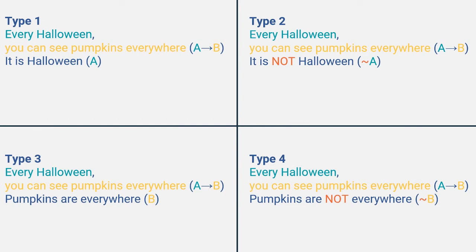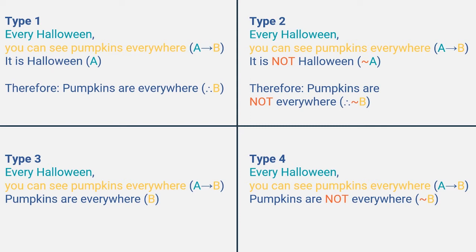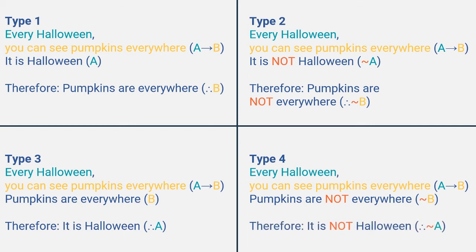All that is left now is to fill in the conclusions. Example 1: we affirm the consequent — therefore I can see pumpkins everywhere, or therefore B. Example 2: we deny the consequent — therefore I cannot see pumpkins everywhere, therefore not B. Example 3: we affirm the antecedent — therefore it is Halloween, therefore A. Example 4: denying the antecedent — therefore it is not Halloween, therefore not A.